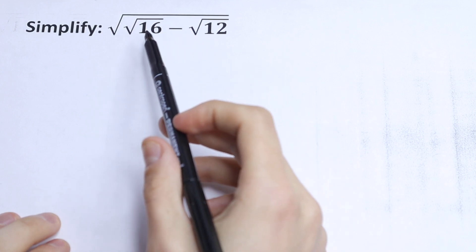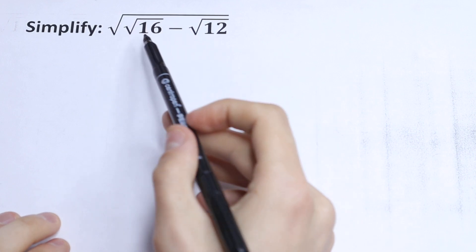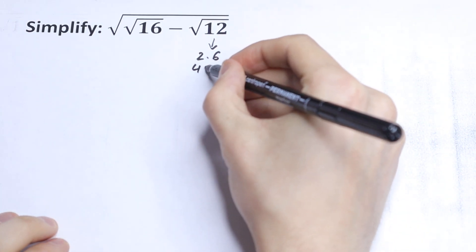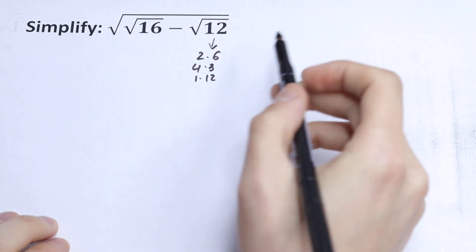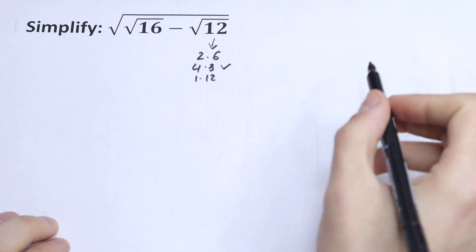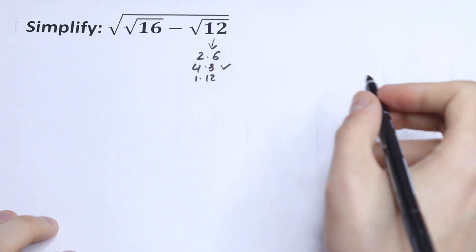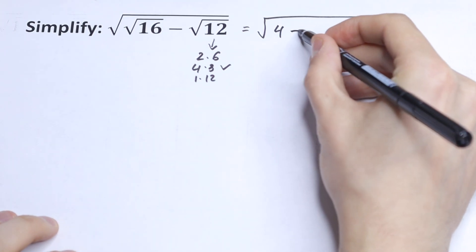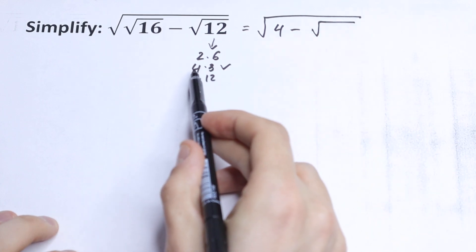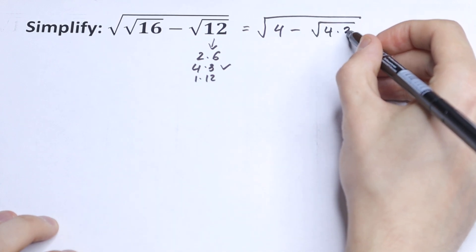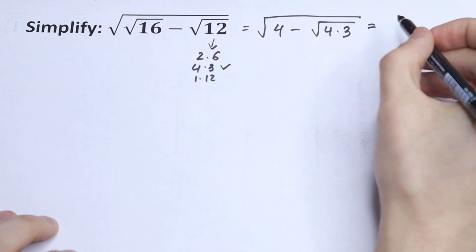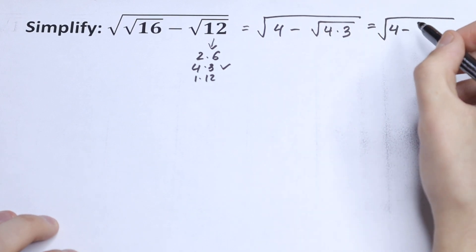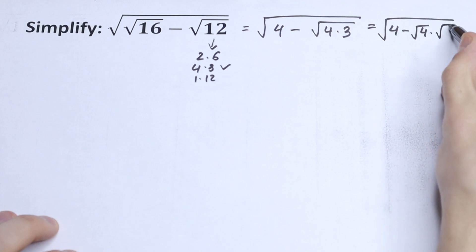First of all, we know that the square root of 16 we can calculate — it will be 4. And this 12 we can write as 2 times 6, 4 times 3, or 1 times 12. The best way to express 12 is to write it as 4 times 3 — I'll show you a little bit later why. So we calculate this 16, it will be 4 minus the square root of 4 times 3. We can write this square root as the square root of 4 minus the square root of 4 times the square root of 3.